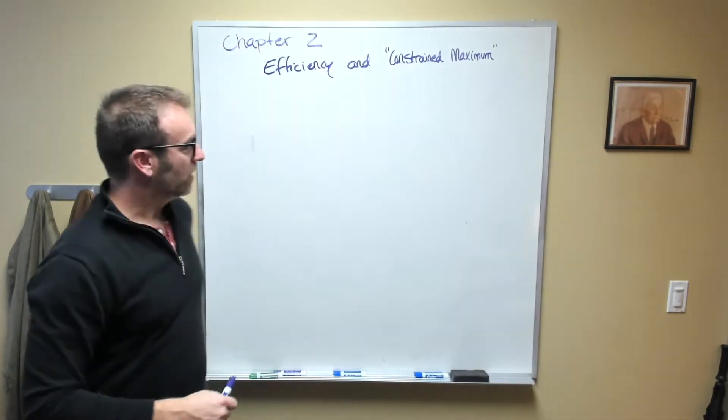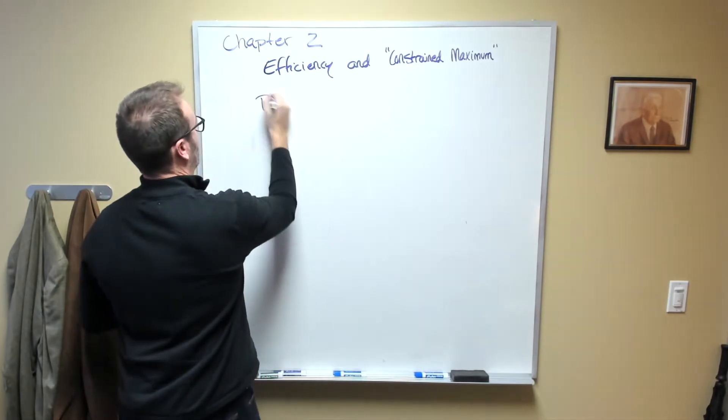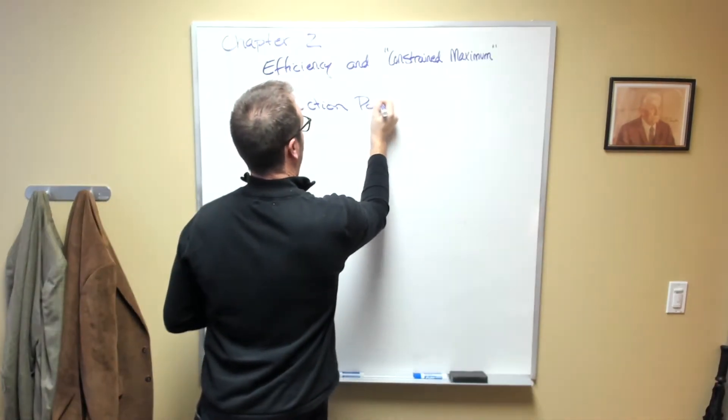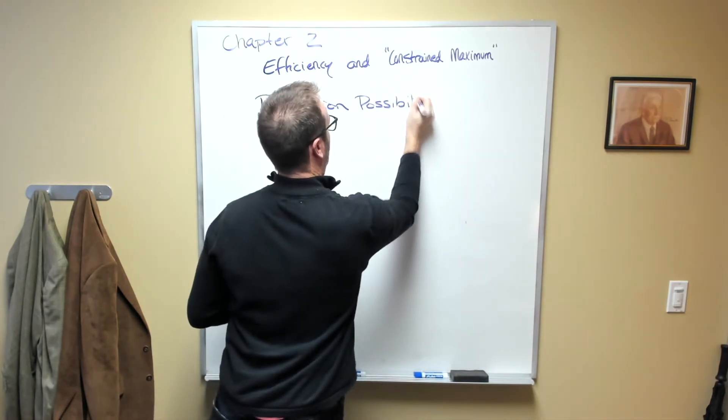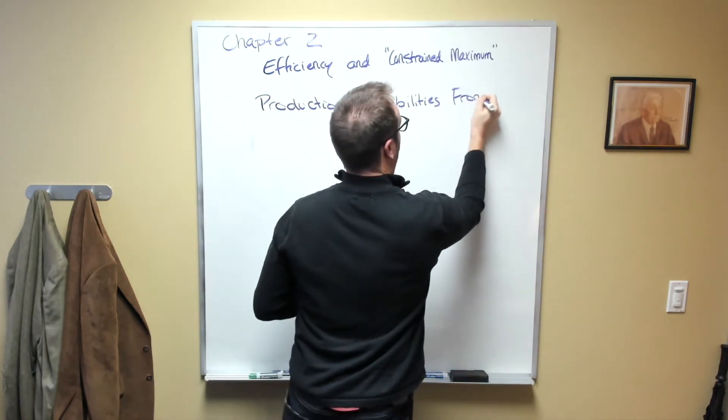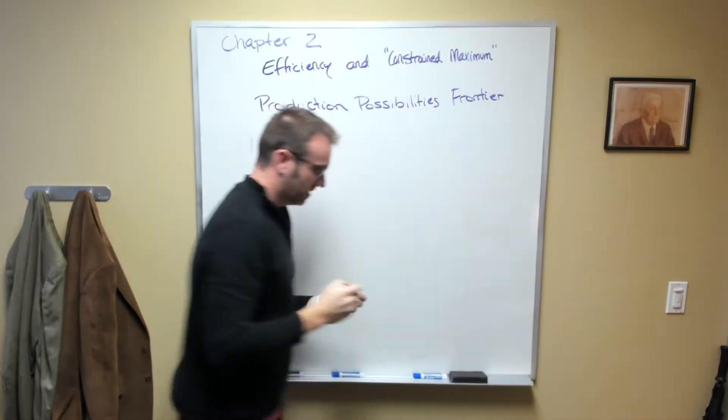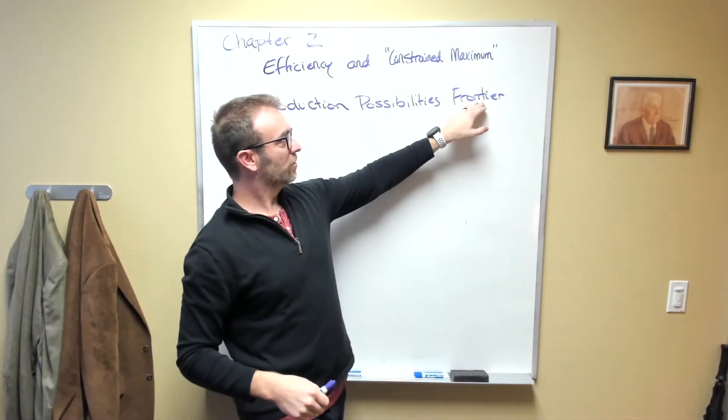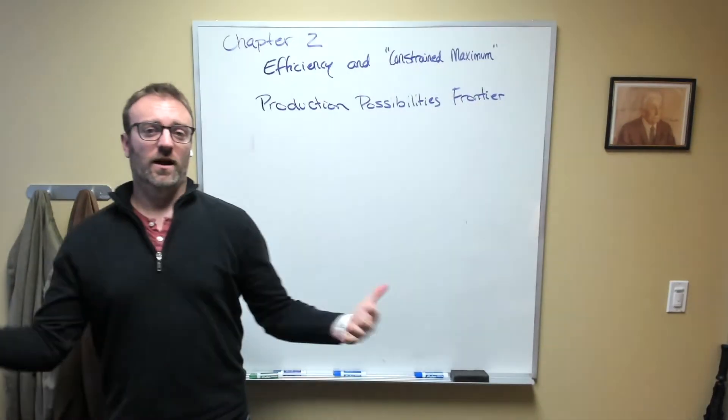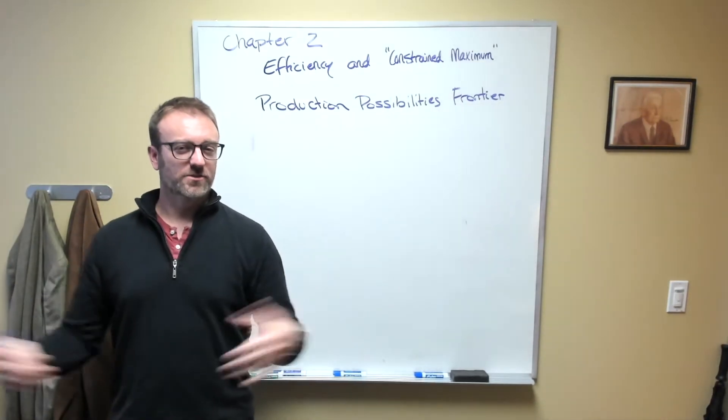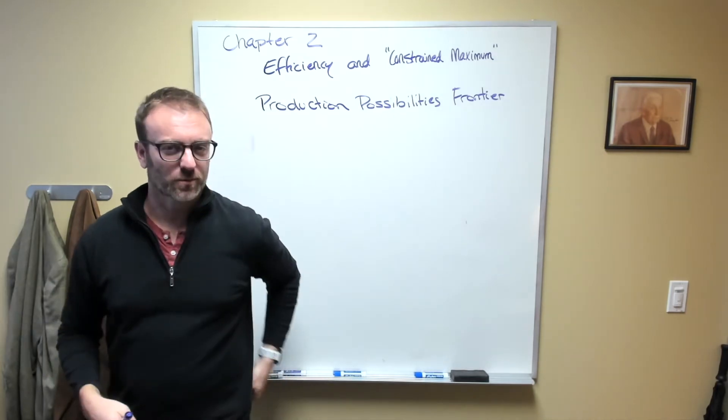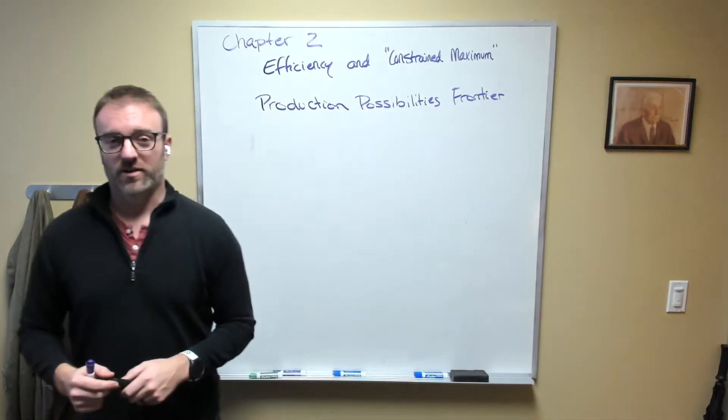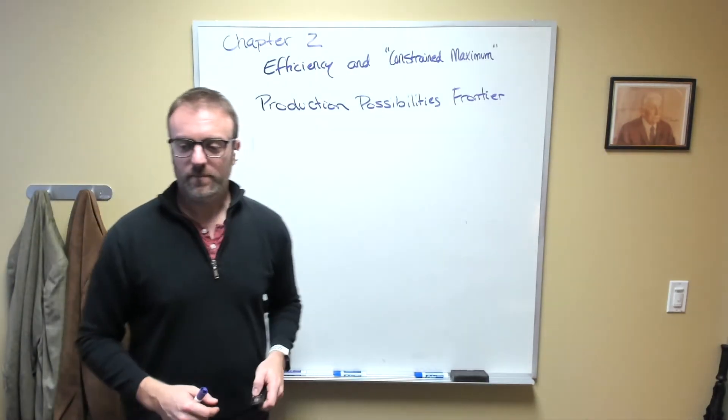More of a specified good would require the reduced production of some other good or goods. This trade-off is represented by the production possibilities frontier. I should note that the authors of this book use the phrase production possibilities boundary instead of frontier. I like frontier because it's the final frontier - frontier just sounds like a cooler word, so I'm going to be using production possibilities frontier.